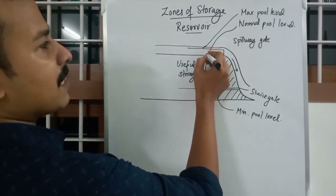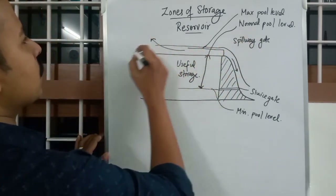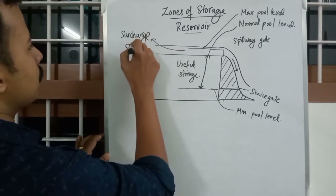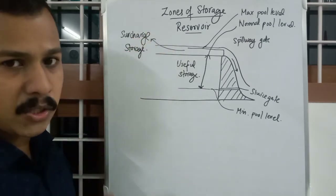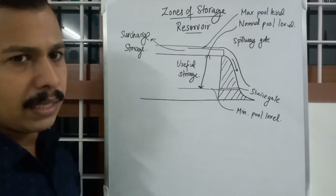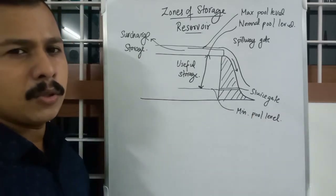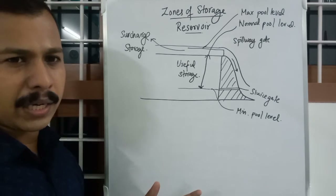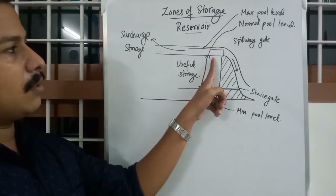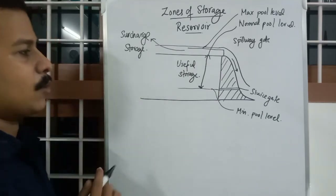The level difference between Normal Pool Level and Maximum Pool Level defines another zone known as Surcharge Storage. Surcharge storage is the amount of water that overflows the dam through the spillway gate. This water is not used for any purpose — it just flows out of the dam and joins the sea without use. It cannot be used for irrigation or hydraulic projects. Surcharge storage is the water from Normal Pool Level to Maximum Pool Level at the time of the design flood.